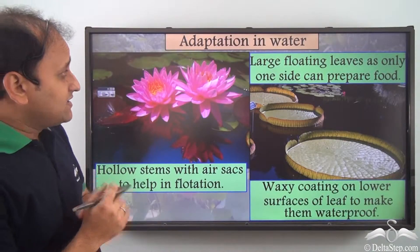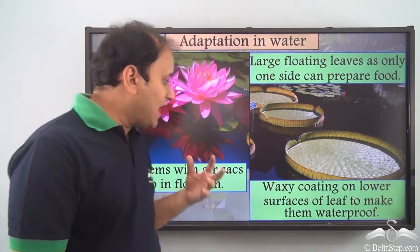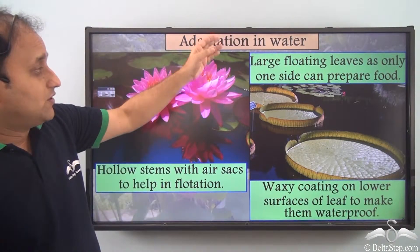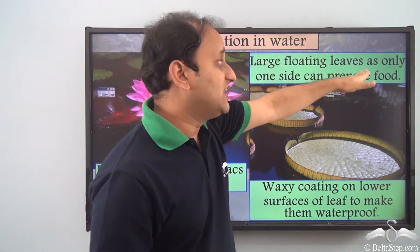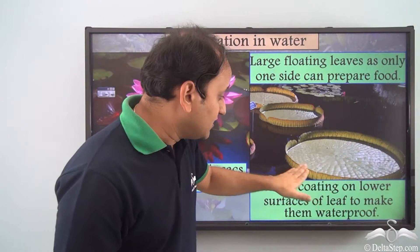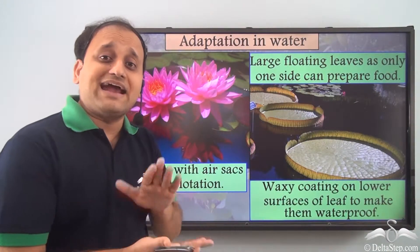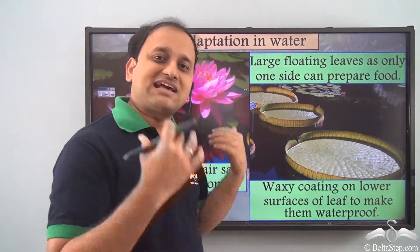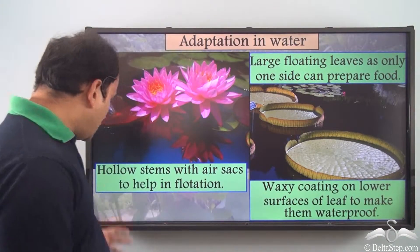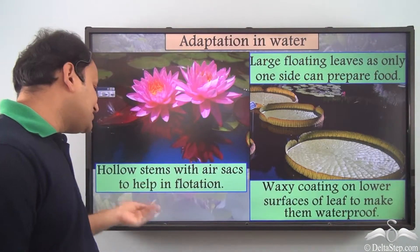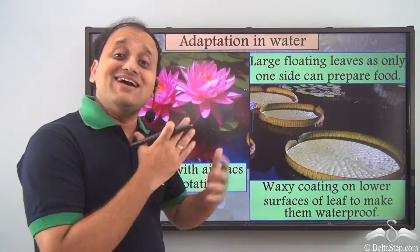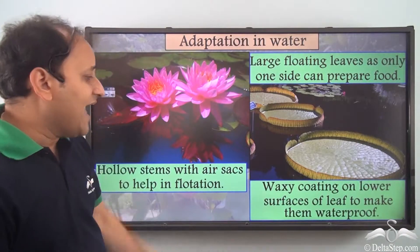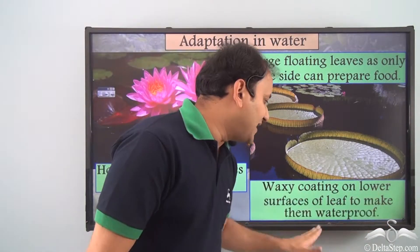Now let's understand some adaptations in water. How do plants survive in water? They have large floating leaves, as only one side can prepare food — one side is completely in contact with water while only one side is exposed to the sun, so they have large leaves to capture the maximum amount of sunlight. Also, they have hollow stems with air sacs to help in floatation, which allows them to easily float on water.